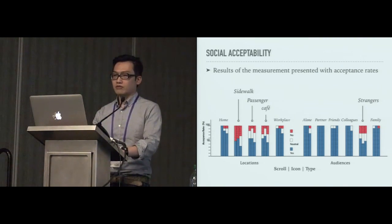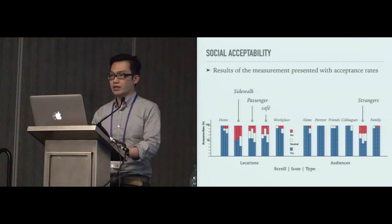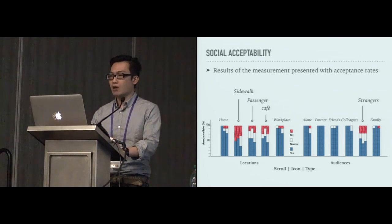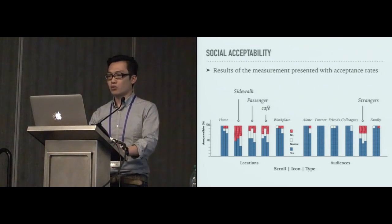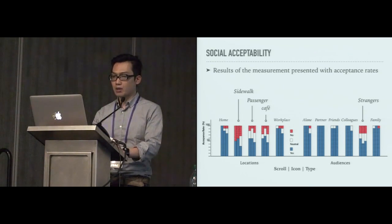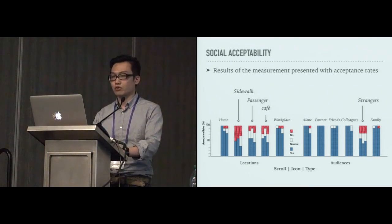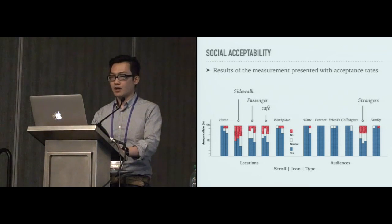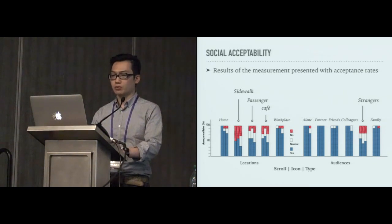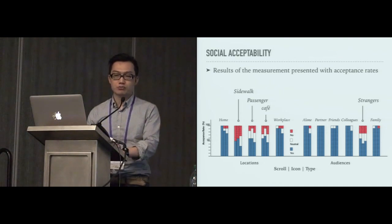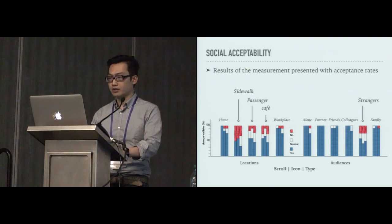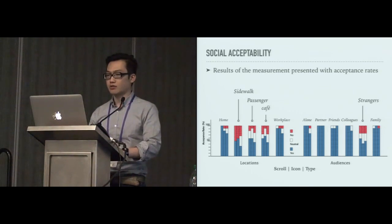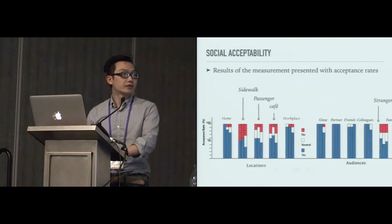And this is the result from the measurement presented with acceptance rates. The red area shows how unwilling the subjects were when using the technology in public. And the blue code is for positive responses. And the white part in between red and blue is neutral responses. And the three bars are grouped together, each representing one of the tasks. So from left to the right is scrolling, select one from many, and typing.